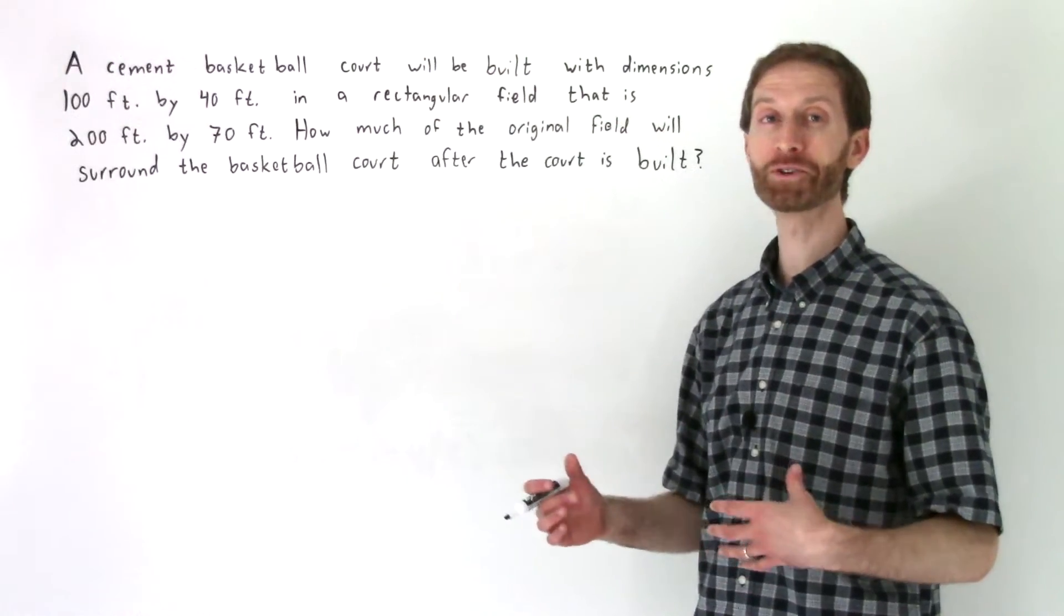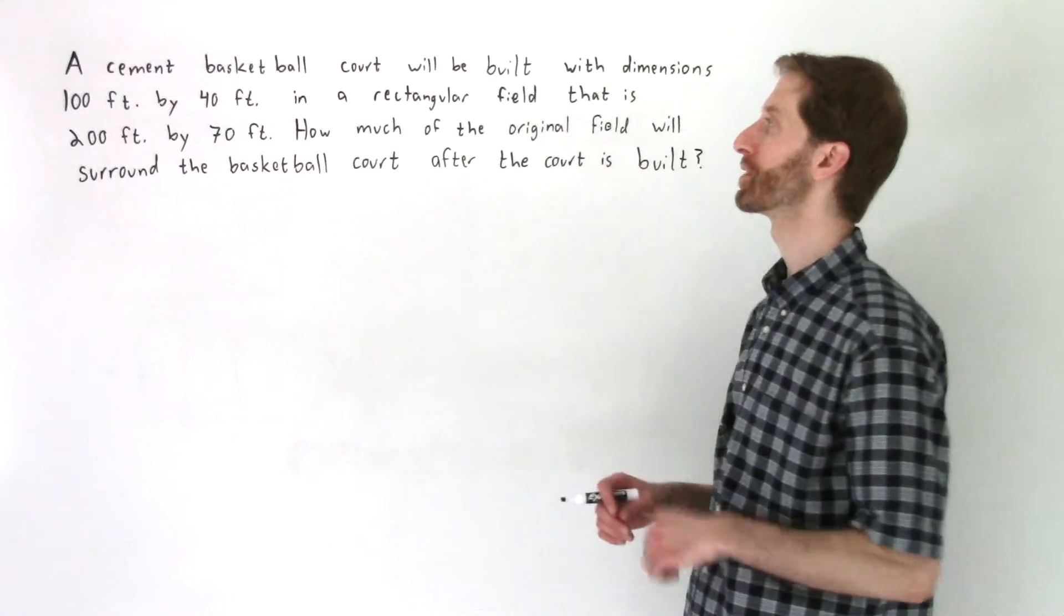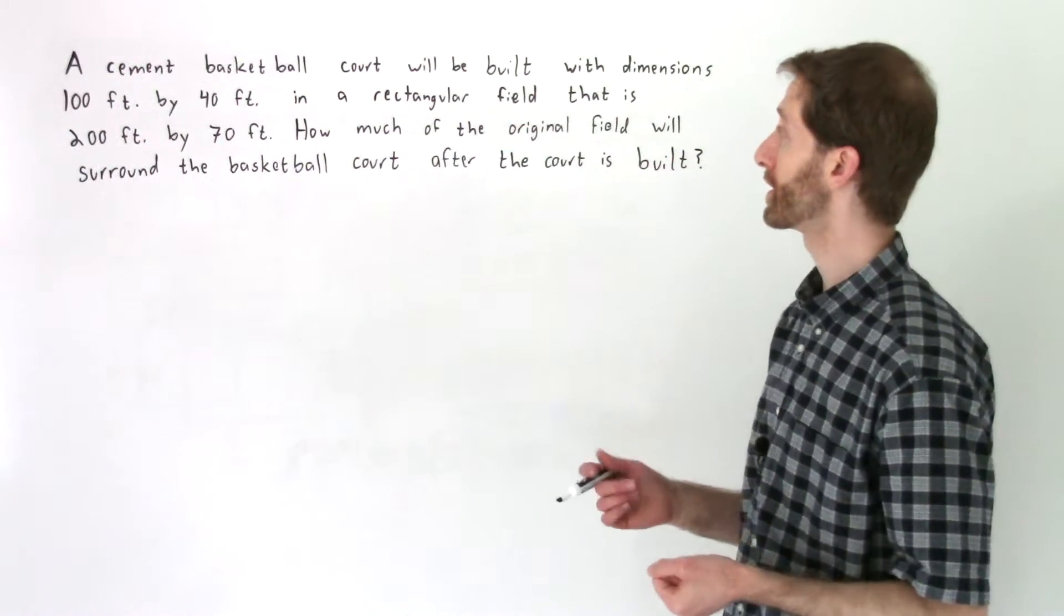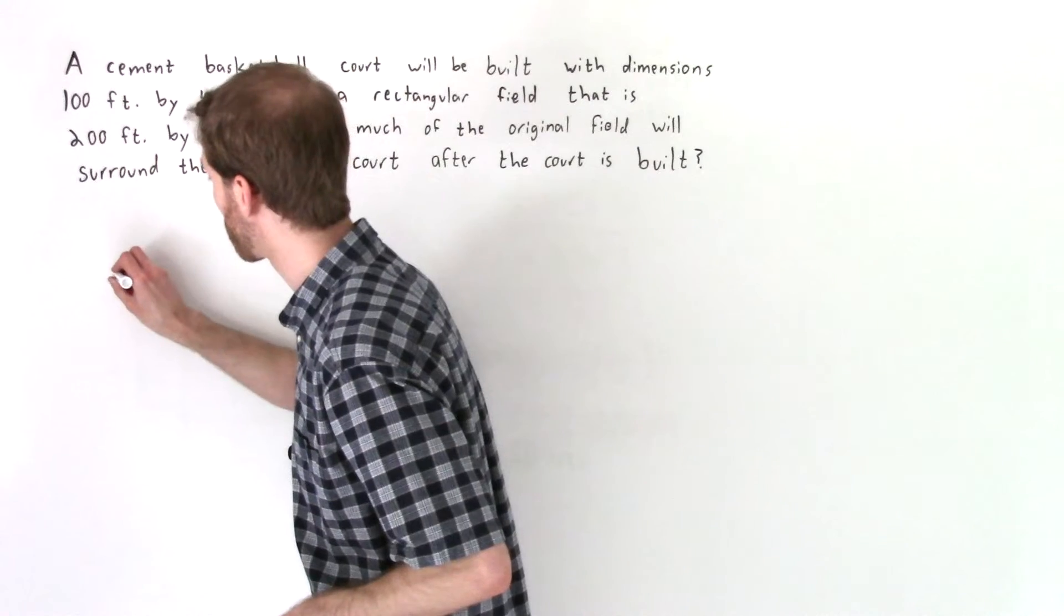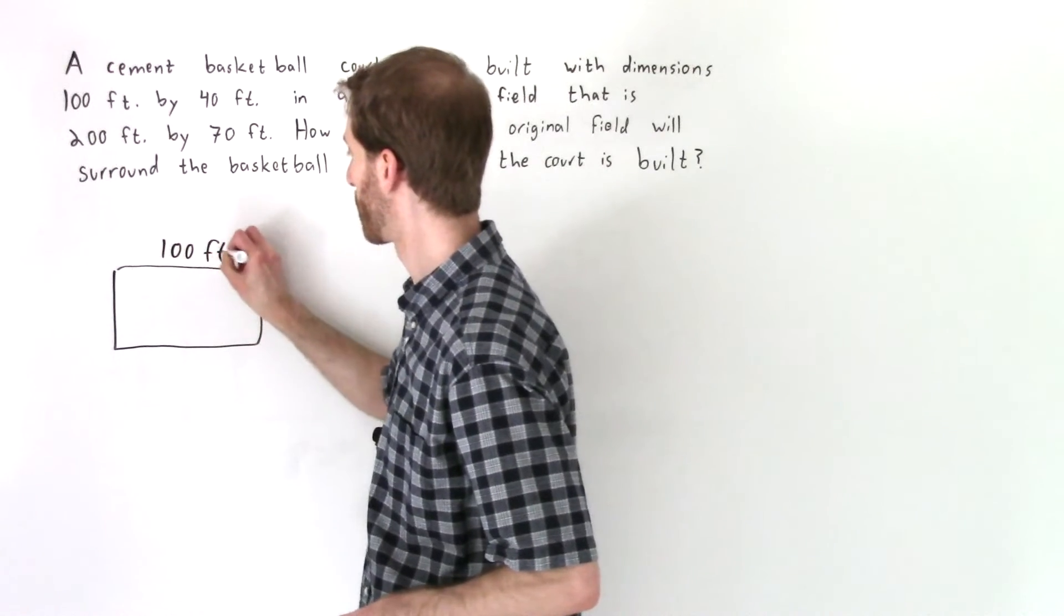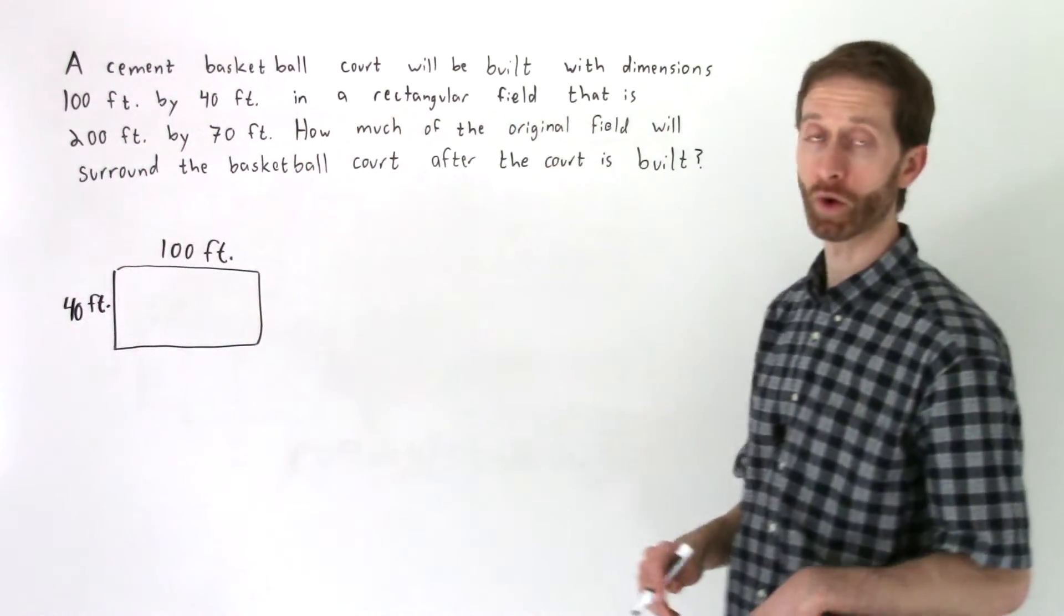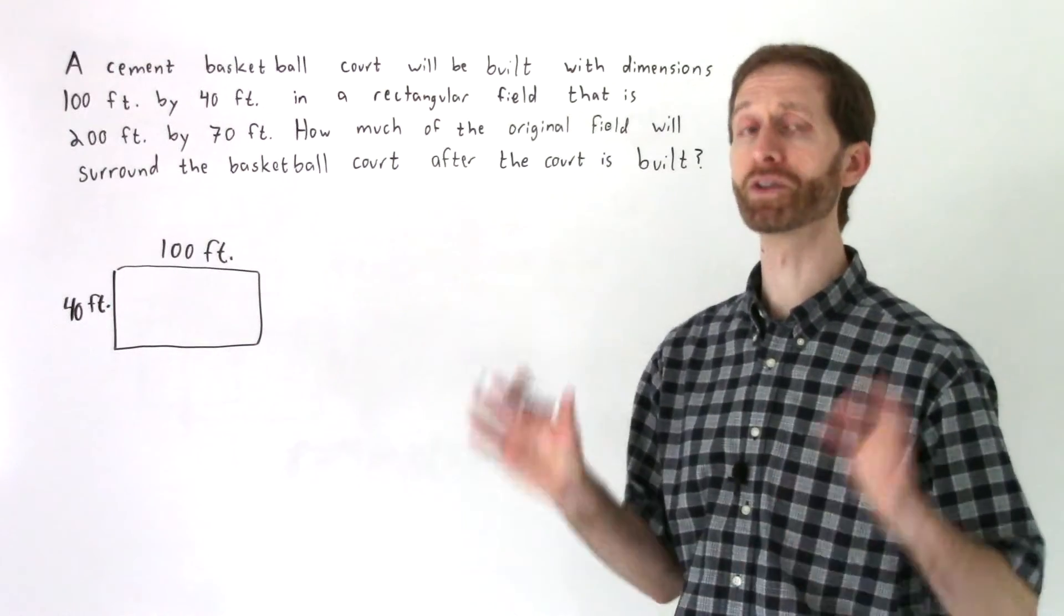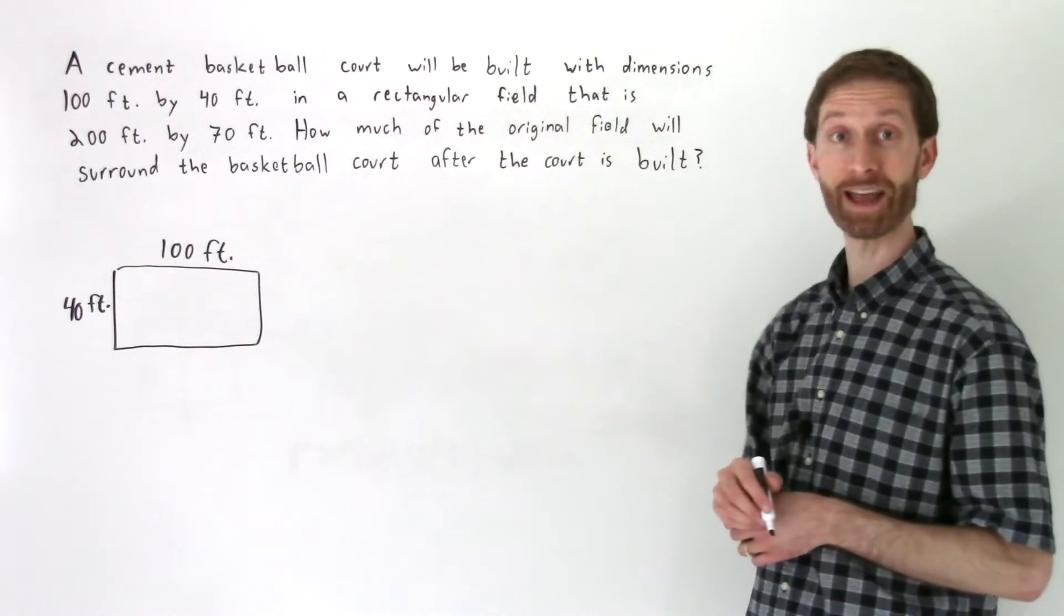Here we are about to unwrap one heck of a cool word problem on the other side of this video filled with rectangle word problems. We've got a cement basketball court will be built with dimensions of 100 feet by 40 feet. Let's draw out a rectangular basketball court. This will be 100 feet by 40 feet. Let's make sure we got our units involved. It is assumed that that basketball court is a rectangle.